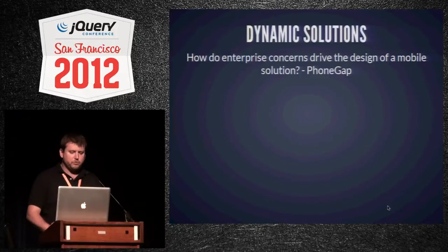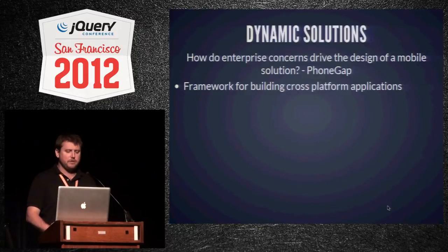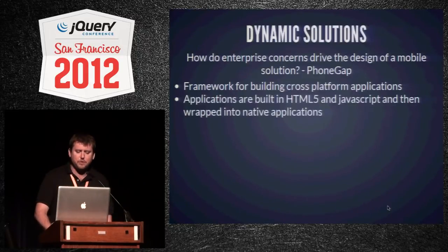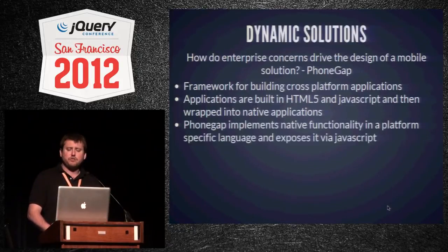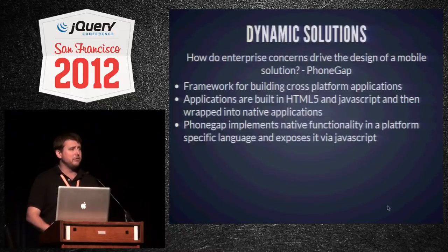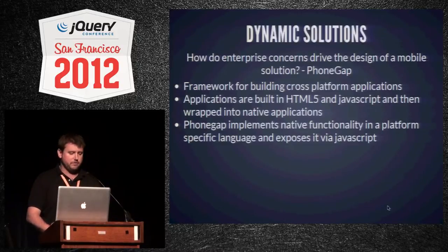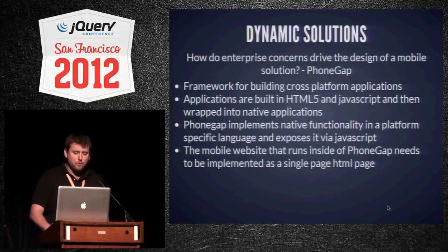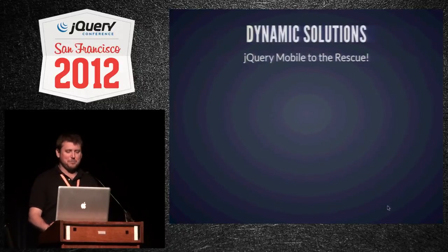PhoneGap is a framework for building cross-platform applications. The applications are built in HTML5 and JavaScript and then wrapped into native applications. PhoneGap implements native functionality in a platform-specific language and exposes it via JavaScript — in iOS it's implemented in Objective-C, in Android in Java, and your JavaScript code calls their API, giving a cross-platform solution. The catch is that the mobile website running inside PhoneGap needs to be in a single HTML page, and that's where jQuery Mobile comes in.